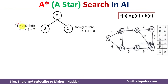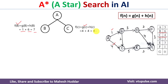For node B: f(B) = g(B) + h(B). The actual cost from the initial state A to B is 1, and the estimated cost h(B) from B to the goal node is 6, so f(B) = 1 + 6 = 7. Similarly, f(C) = g(C) + h(C). The true cost from A to C is 4 and h(C) = 4, so f(C) = 4 + 4 = 8.